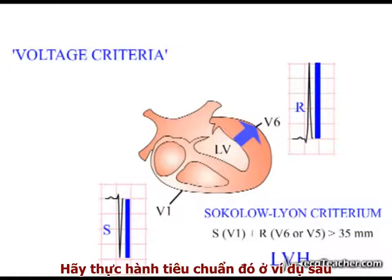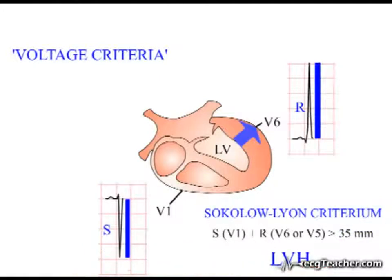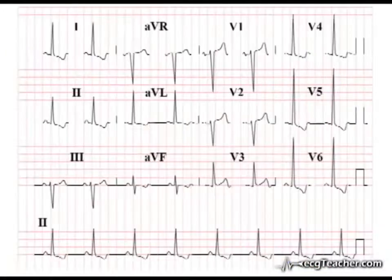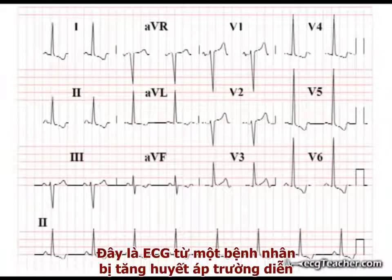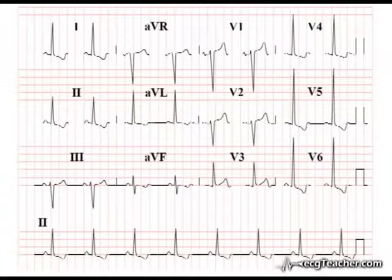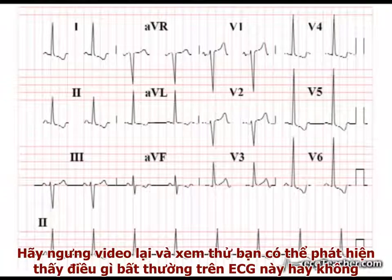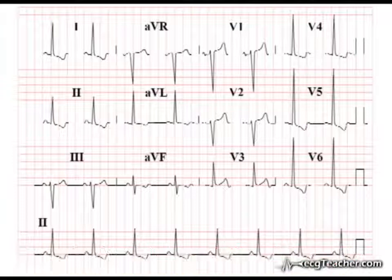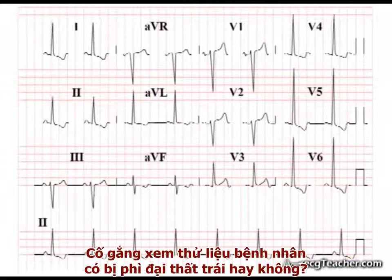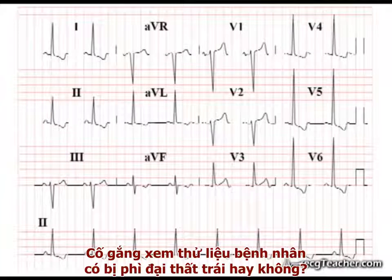Let's put this criterion into practice. This is an ECG from a patient with long-standing hypertension. Why not stop the video at this point and see if you can work out the abnormalities present? Try to determine if the patient has LVH and list any other abnormalities or points of interest you identify.